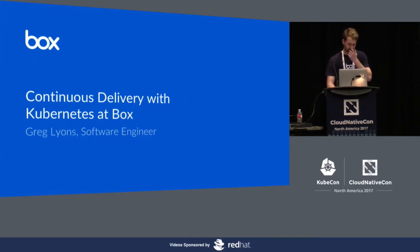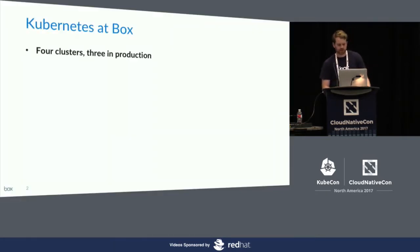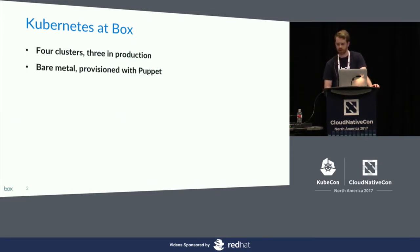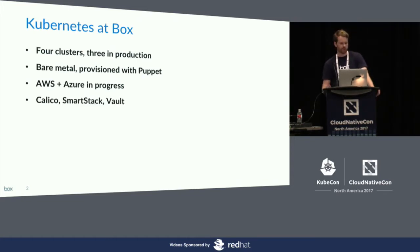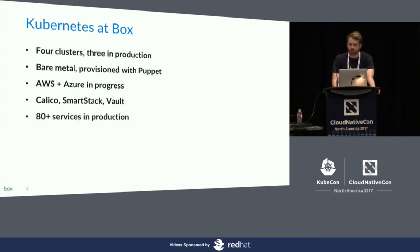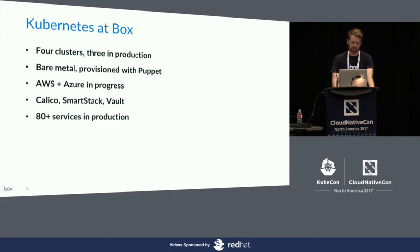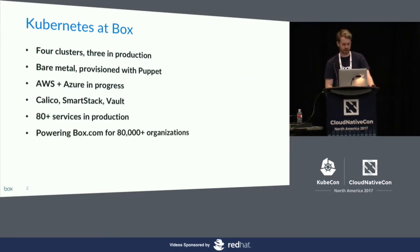Taking a quick look at what Kubernetes looks like at Box, we're currently running four clusters, three of which are in production. Those clusters are running on bare metal in our own data centers provisioned with Puppet, but we're in the process of rolling out AWS and Azure production clusters as well. We're using Tigera's Project Calico for networking, SmartStack by Airbnb for service discovery, and HashiCorp's Vault for secrets management. We have about 80 services running in production, representing a significant chunk of our core mission-critical code that powers Box for over 80,000 organizations around the world.